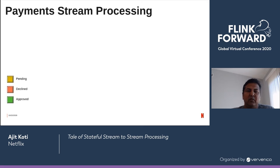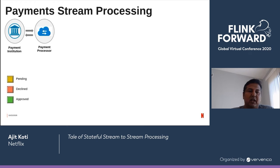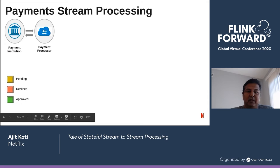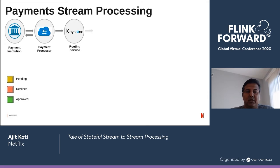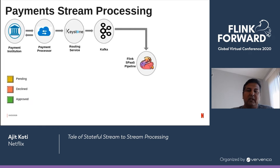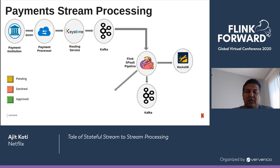Here's a high-level overview of the payment stream processing. The initial part is very similar to the batch layer. The Netflix payment processor connects with the payment processor to charge or validate the user's card. The payment processor synchronously responds back with the transaction status — pending, declined, or approved. The payment processor then publishes this transaction to Keystone, the routing service, which publishes transactions to Kafka. These messages are consumed by the Flink stream pipeline within Netflix, which processes these events and writes out summary and aggregate data to Kafka, Iceberg, and Druid. It also uses RocksDB for state management.